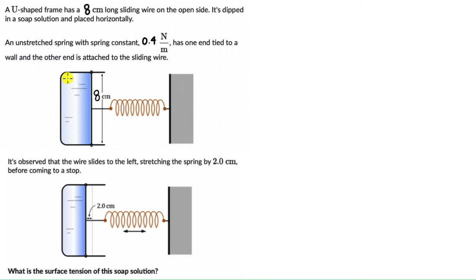The other end is attached to the sliding wire. It is observed that the wire slides to the left, stretching the spring by 2 cm, and then it comes to a stop. We need to figure out the surface tension of this soap solution.